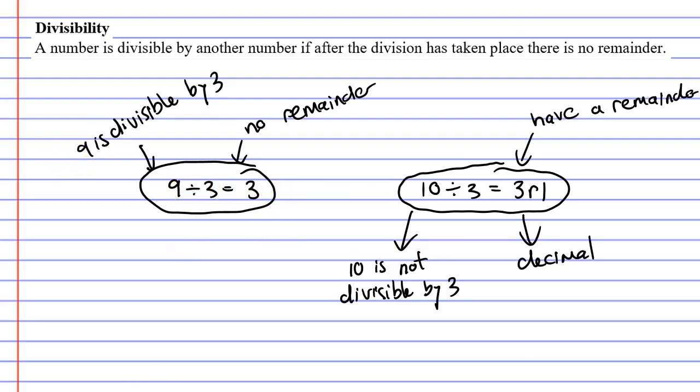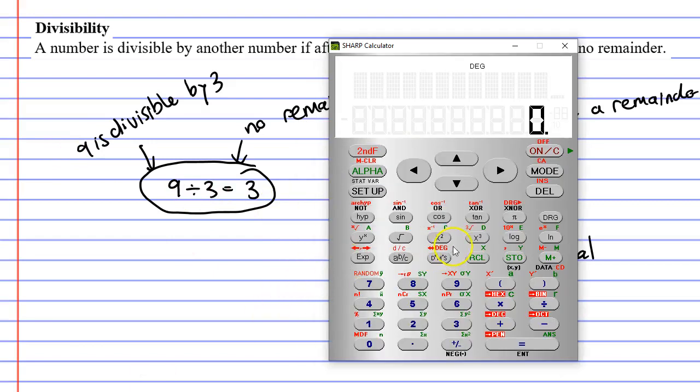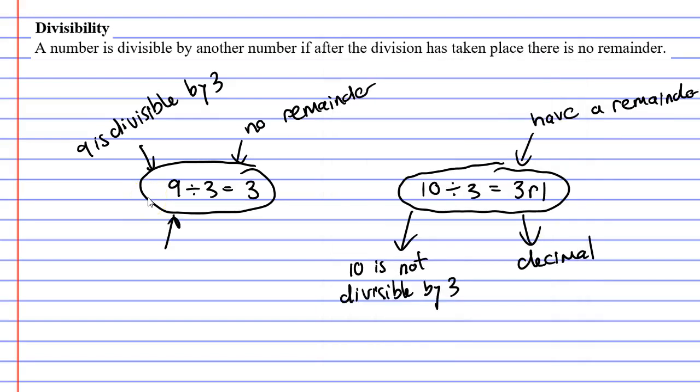What about when it is divisible? What happens on our calculator? Let's do 9 divided by 3 on our calculator. You'll notice we get a whole number. So if our solution is a whole number, then we can say it is divisible.